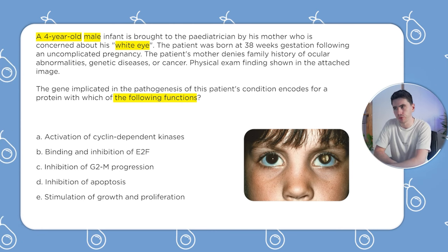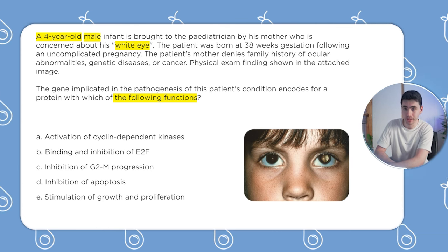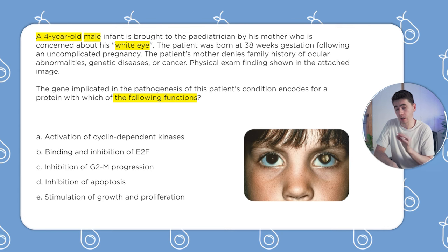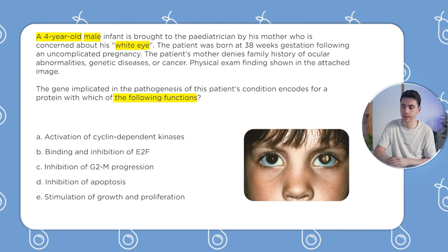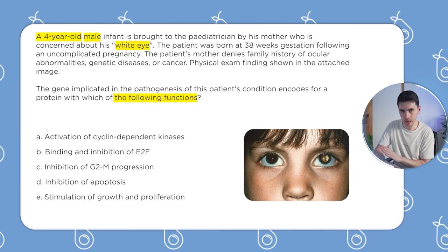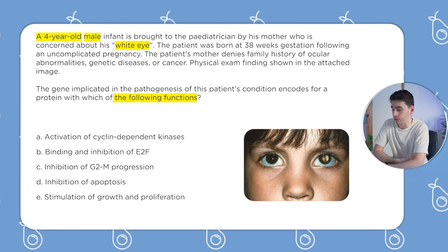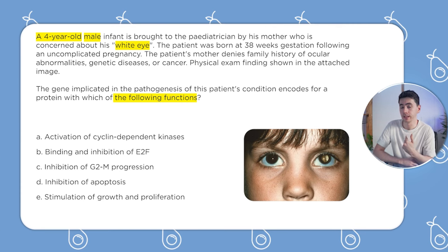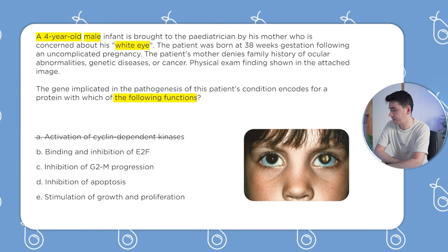It might also be useful to know that the two most common tumor suppressors are retinoblastoma (RB) and P53. Step three is to start eliminating answers we are absolutely sure cannot be correct. Activation of a cyclin-dependent kinase — a CDK is responsible for moving the cell cycle forward, so we can cross that out, because a tumor suppressor wouldn't activate something that drives the cell cycle forward.